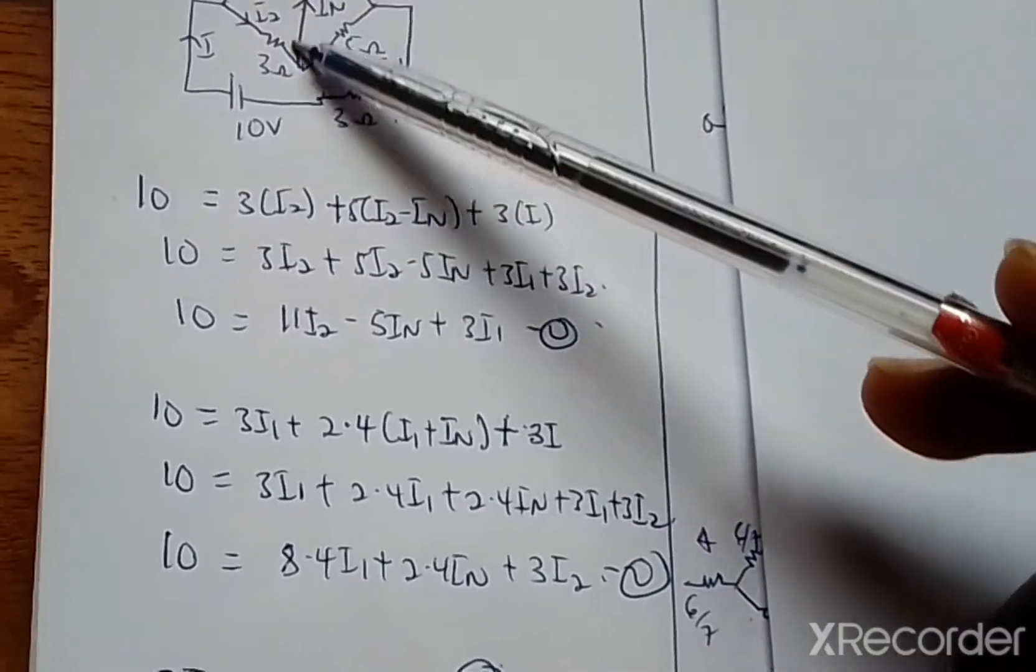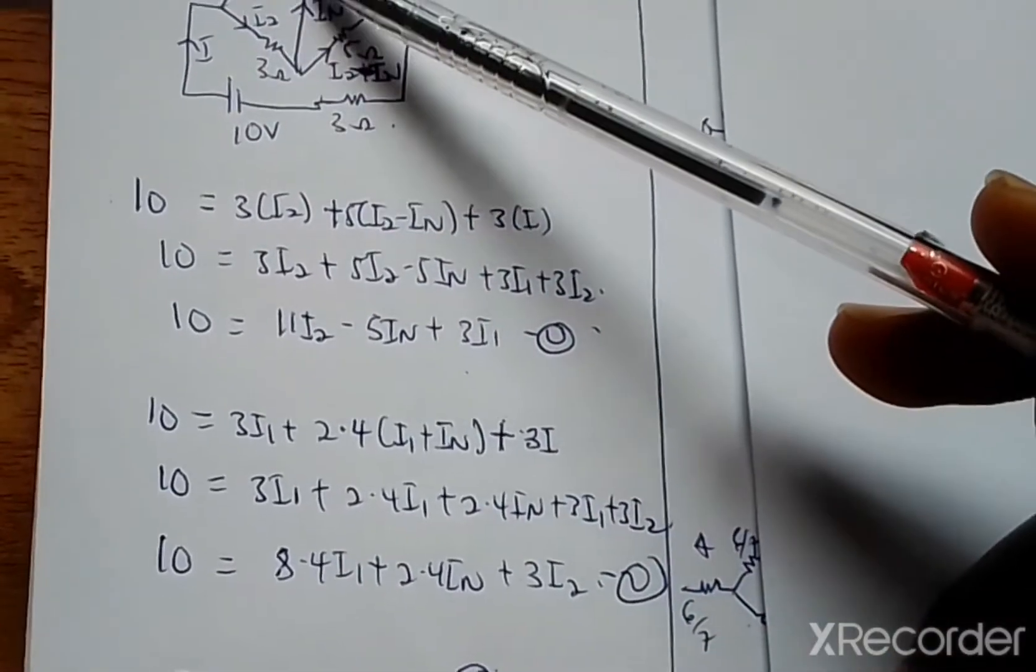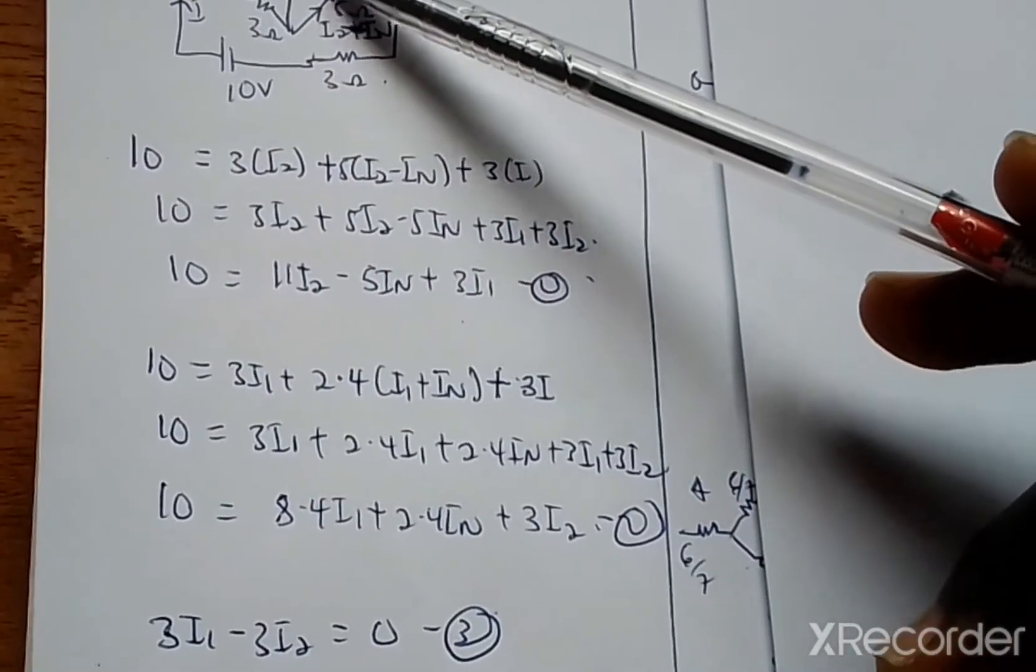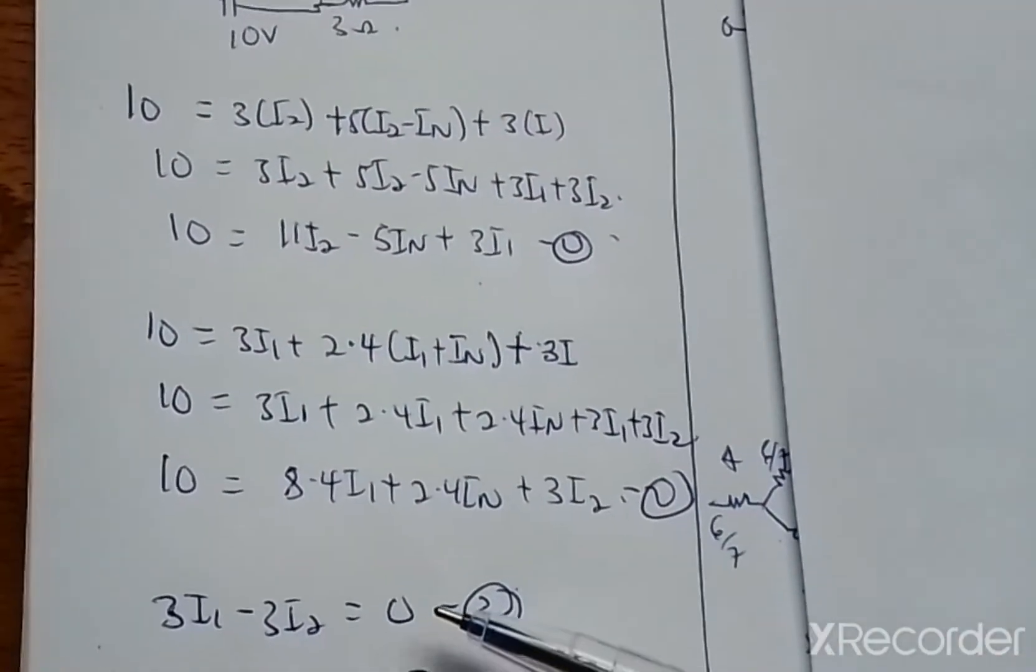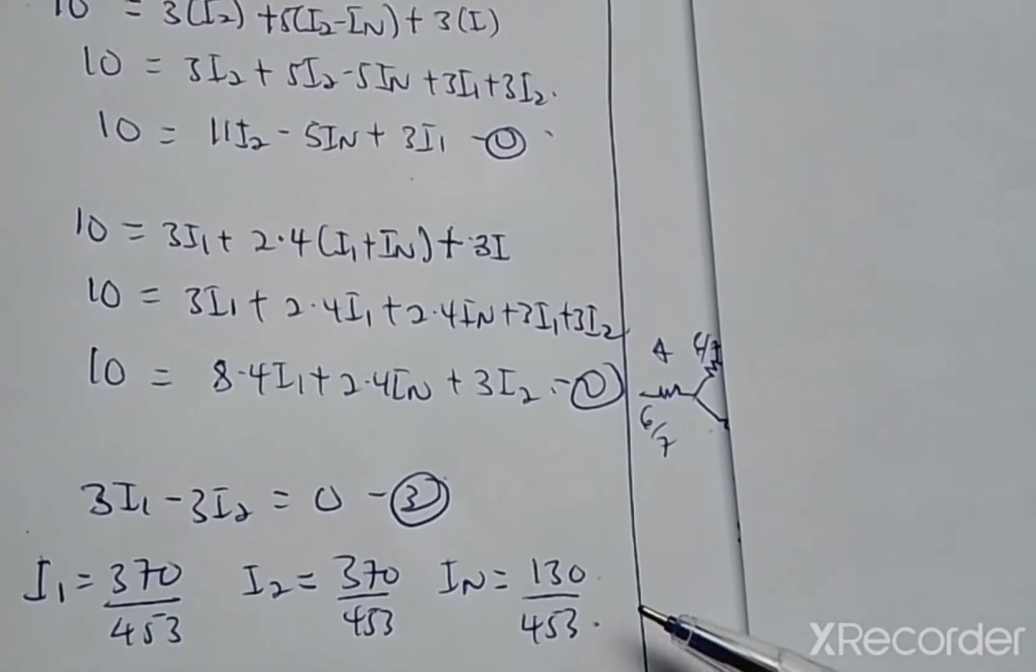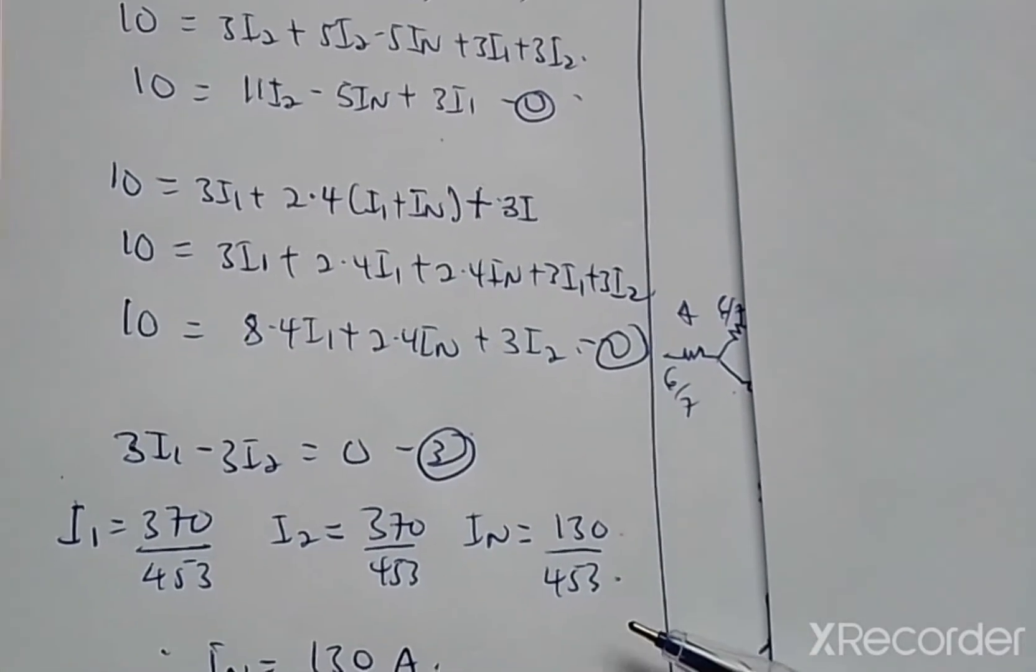Finally, we will take this loop. Here we get 3I1 minus 3I2, then here is zero. So solving this we get I1 to be this, I2, and IN to be 130 over 453 amperes.